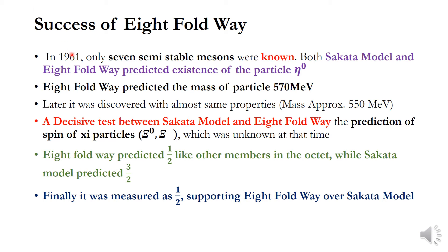In 1961, only seven semi-stable mesons were known. Both the Sakata model and the Eightfold Way predicted the existence of the particle η⁰. The Eightfold Way also predicted its mass to be approximately 570 MeV. It was later discovered with a mass of approximately 550 MeV — very close to the predicted value. From the shape of the supermultiplet, one can predict the strangeness, baryon number, spin, and parity of unknown particles.